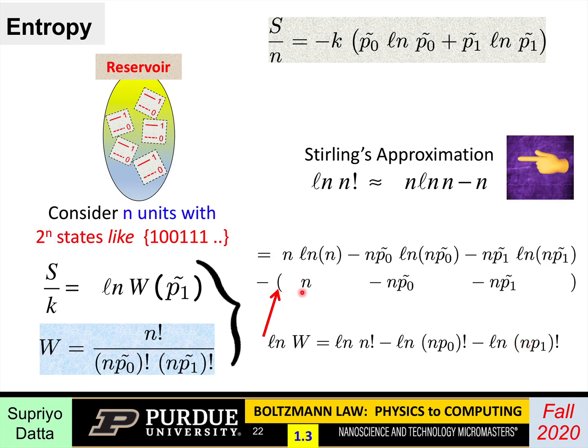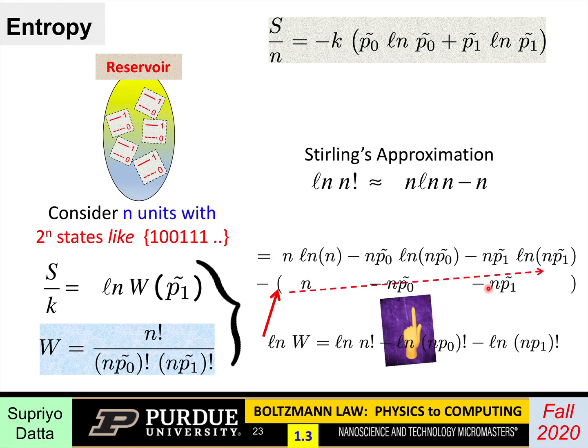Now, you'll notice that what's in here, n minus np0 minus np1, that just cancels out. Why? Because remember, p0 plus p1 is equal to 1. And so we are left with the top line.